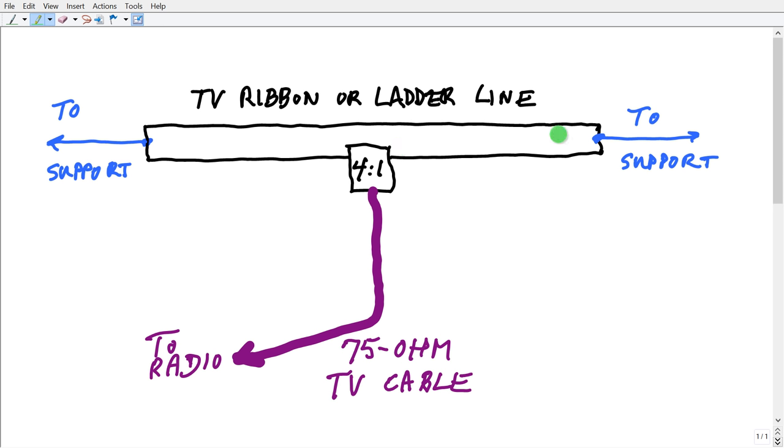Your antenna itself should be a parallel wire line, for example a common 300 ohm TV ribbon or any impedance of ladder line. The characteristic impedance of this line doesn't make any difference. You could even use zip cord for it theoretically, although I wouldn't do that. I would use ladder line or TV ribbon.